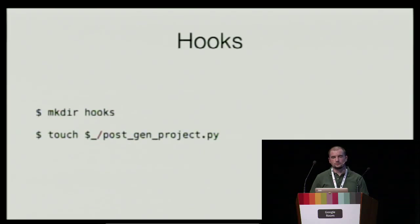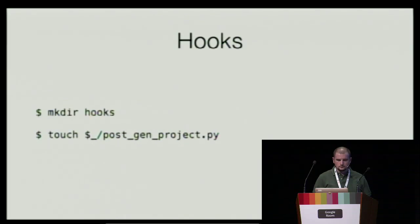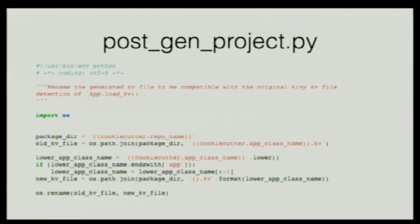Another great feature of Cookiecutter is that you can have post and pre-generation hooks. You simply need a hooks folder at the very root of your template, and inside you can put a shell script or a Python module — it will be executed by Cookiecutter either before the project generation or afterwards. In my post-generation hook, the most important part is that Kivy has its own way of detecting a Kivy language file. By default I use the application class name as the Kivy language filename, but since users are allowed to append 'app' to the class name, I do some string slicing to strip that suffix — it's basically an adaptation of the Kivy source code responsible for finding Kivy files.